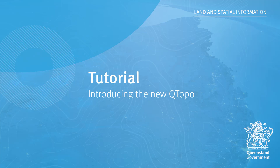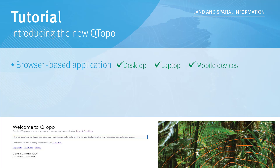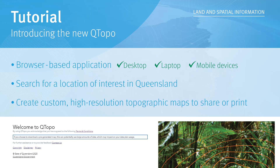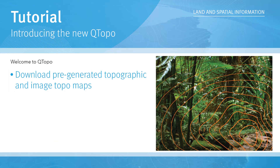Welcome to the Qtopo tutorial, designed to provide you with an overview of the Qtopo application and enable you to use it with confidence. Qtopo is a browser-based application that provides you with the ability to search for a location of interest in Queensland and create custom high resolution topographic maps to share or print. The Qtopo application can also be used to download pre-generated topographic and image topo maps for free.